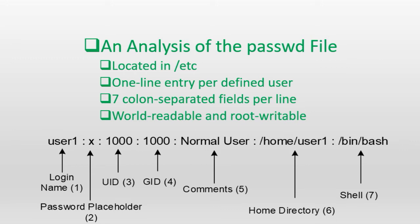Field number two contains the letter 'x' by default, which points the login program to consult the shadow file for the password and password aging information. An asterisk character in this field instead of 'x' would disable the user account. If you see a combination of random letters, numbers, and special characters instead, it would imply that the shadow password mechanism is inactive and the shadow file does not exist. If this field is empty, the user will not be prompted for their password and will be allowed to log in without a password.